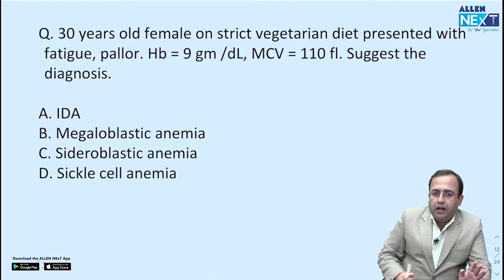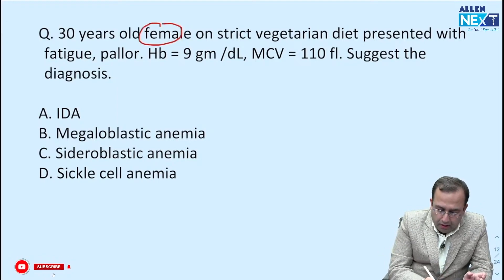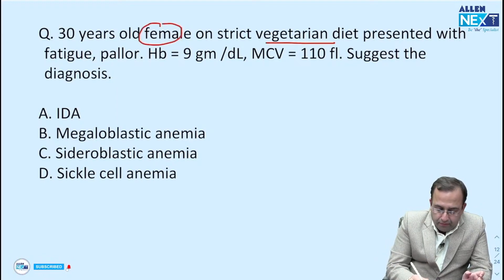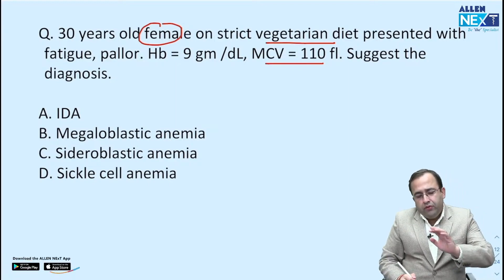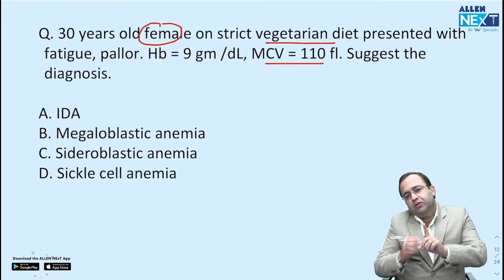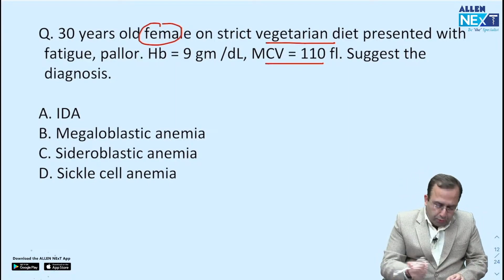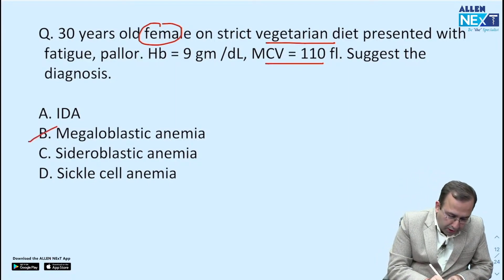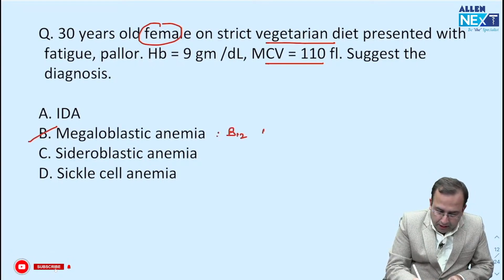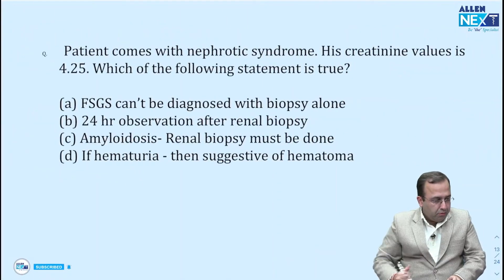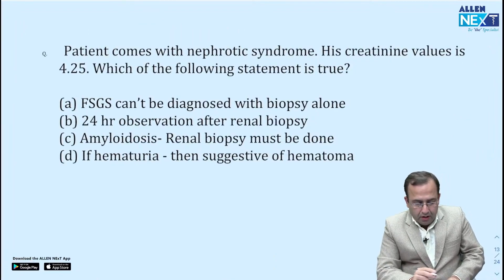Next question — straightforward again. A 30-year-old female on a strict vegetarian diet has low hemoglobin, MCV is high. The minute the examiner mentions a vegetarian, he is pointing towards vitamin B12 deficiency, megaloblastic anemia.